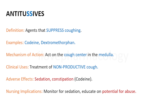Coming to antitussives — these are agents which suppress coughing. Examples are codeine and dextromethorphan, which belong to the opiate group of drugs. Their mechanism of action is to act on the cough center present in the medulla and depress it. These drugs are used in treating non-productive cough, also called dry cough. So expectorants are for wet cough and antitussives are for dry cough.